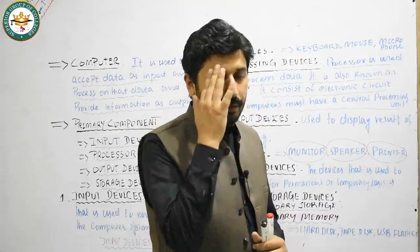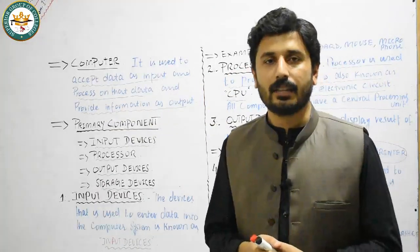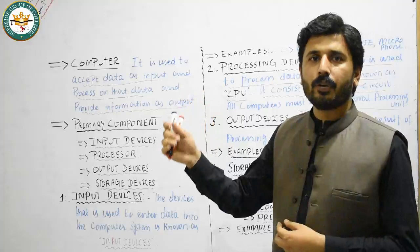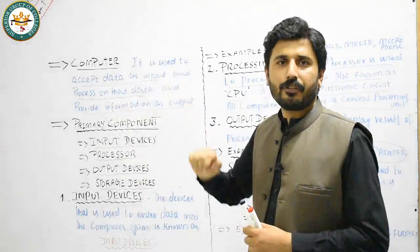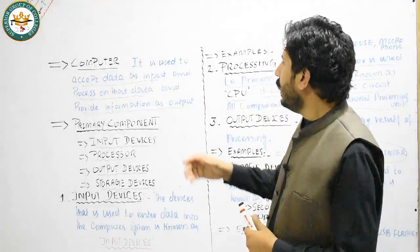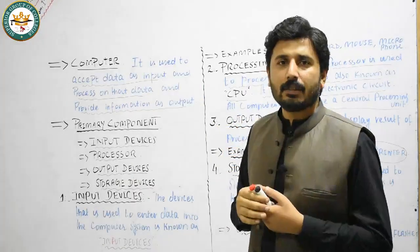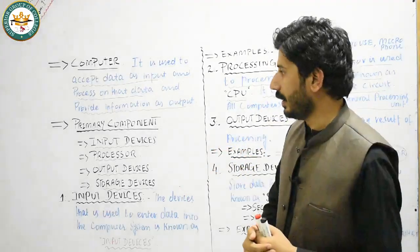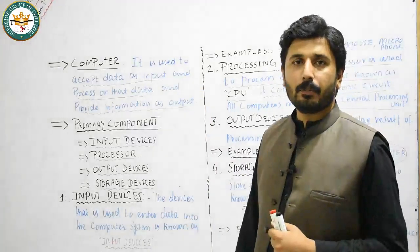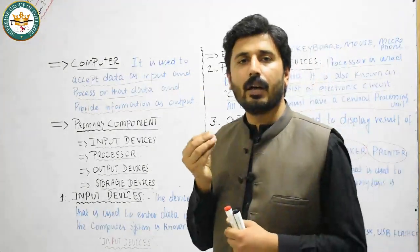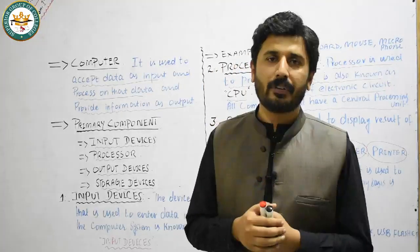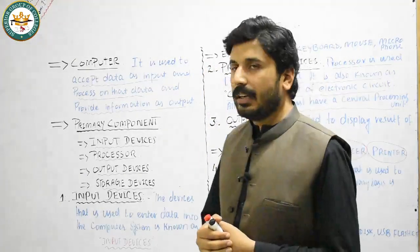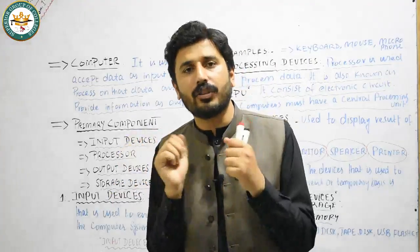Let's review today's whole lecture. First, we covered the computer definition: a computer is a device that accepts data, processes the data, and provides results. We have four primary components: the first is input devices, the second is processing devices, the third is output devices, and the last is storage devices.